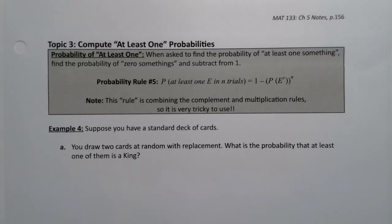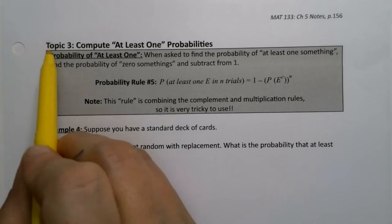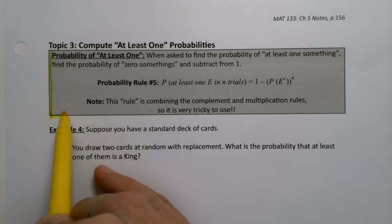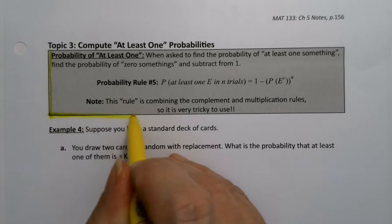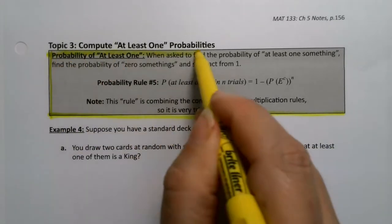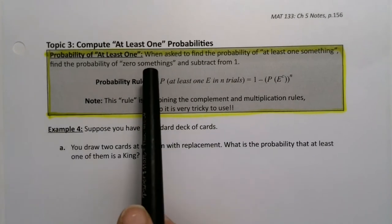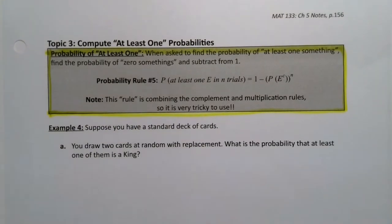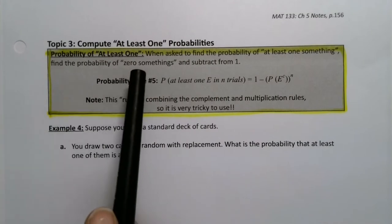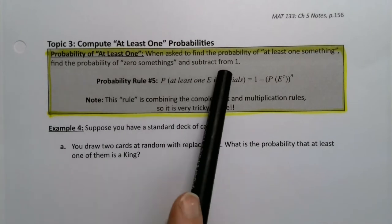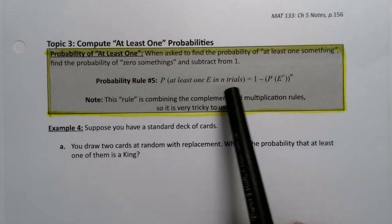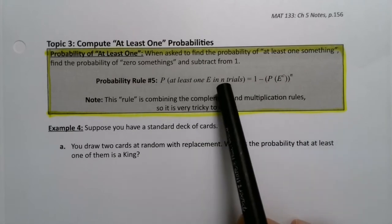It's time to learn our last probability rule: the probability rule for 'at least one.' In the fall of 2020 there are a couple of typos in here, so pay close attention and fix them — those typos are also in the exam notes packet. If you want to find the probability of at least one of something, you find the probability of zero of that something and subtract it from one.